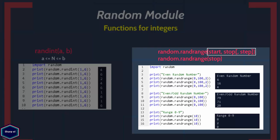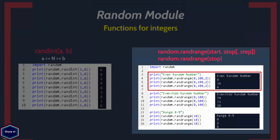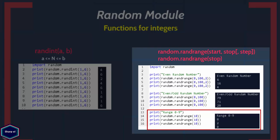You can set step to any integer value, and if it's not given the difference between two consecutive values is always 1. If only one argument stop is given, it is interpreted as the total numbers in the range starting from 0. In one example, randrange() returns an even random number between 0 and 100; in another it returns a random number between 0 and 100; and in another it takes only one argument and returns a random integer between 0 and 9.